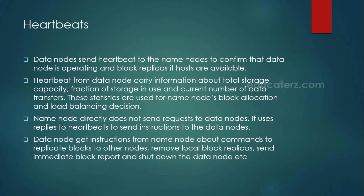The data node also tells the name node how much storage capacity is in use. By looking at that information, your name node can take a decision on whether this data node is alive or not, and also how much percentage of the space is free in this particular data node — all this information is obtained by checking the heartbeat signal. An important point to remember: your name node will never directly send a request to the data nodes. It is the data node's responsibility to talk to your name node and send this heartbeat signal. The name node uses these heartbeat signals to reply back with any information, using the previous heartbeat signals sent from your data node.